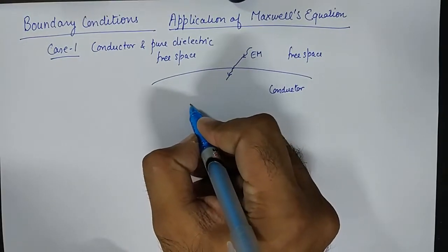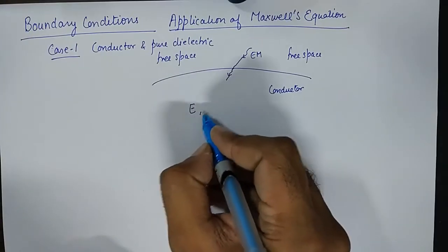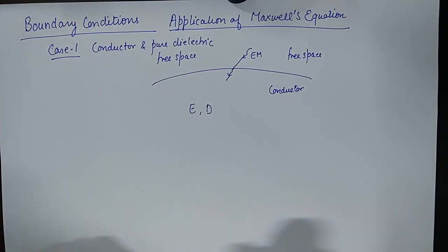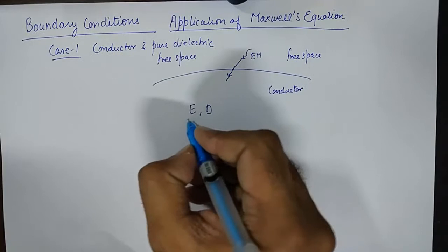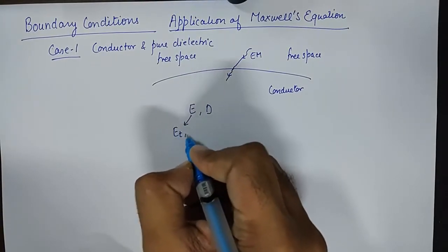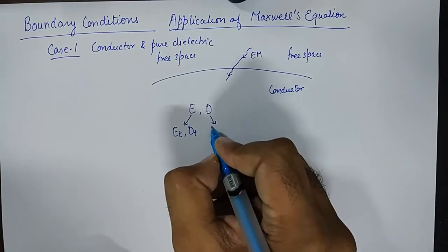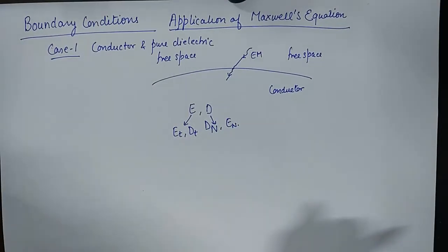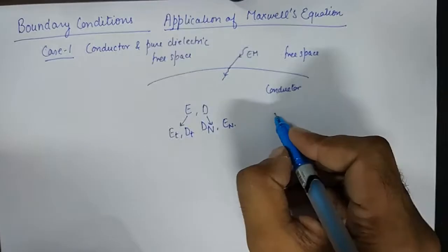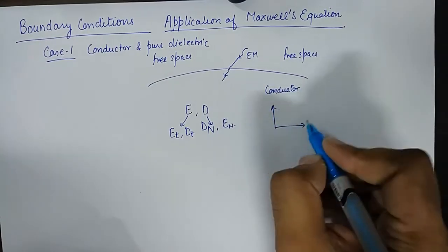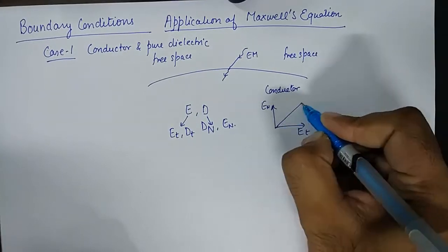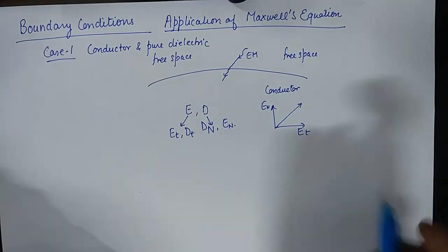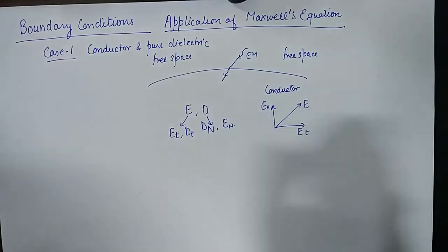We'll need to study the behavior of E and D, where E is electric field intensity and D is electric flux density. We need to find both the tangential and normal components of E and D. The reason is that any vector is composed of its tangential and normal components — using the parallelogram law, the resultant of a vector is made up of its tangential and normal components.